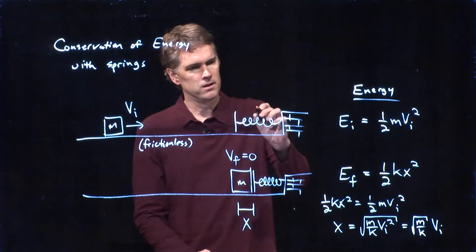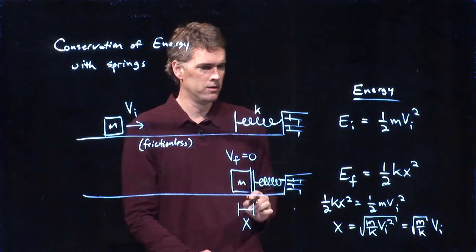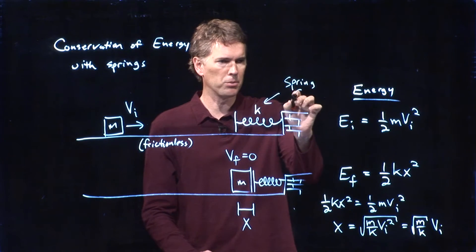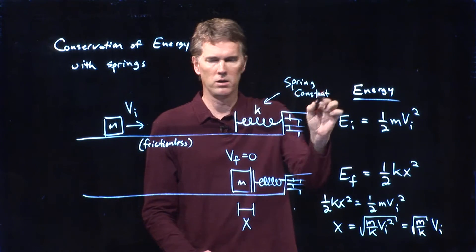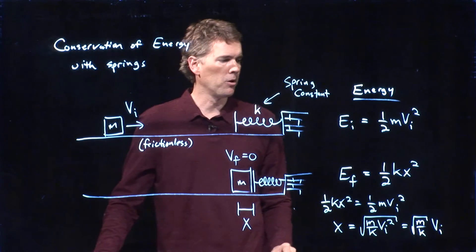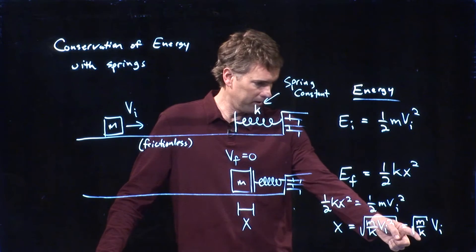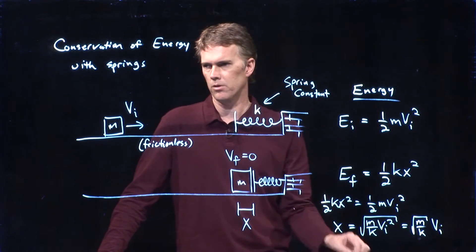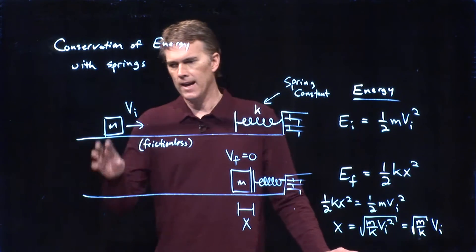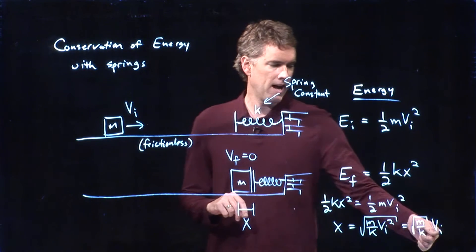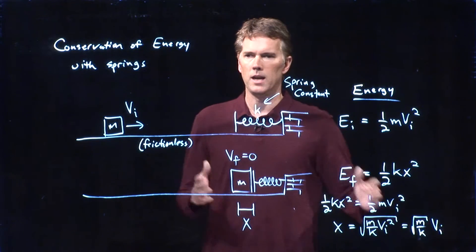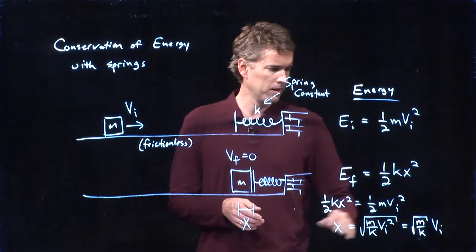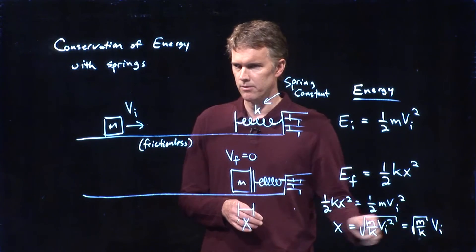If the spring is really strong, then k is a big number. A big spring constant means a strong spring. And so it will compress less. And that makes sense because it's in the numerator. I mean in the denominator right there. If k goes up, then x of course goes down. And then finally, if I throw in this mass at a faster initial speed, it's going to compress that spring even more.